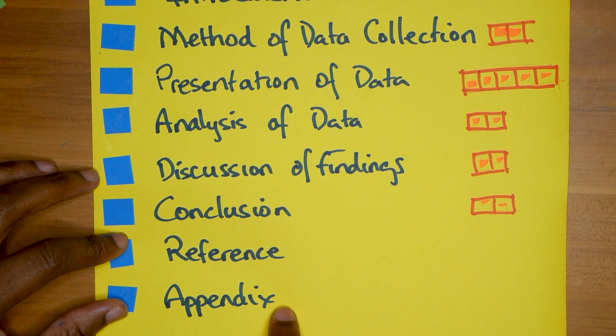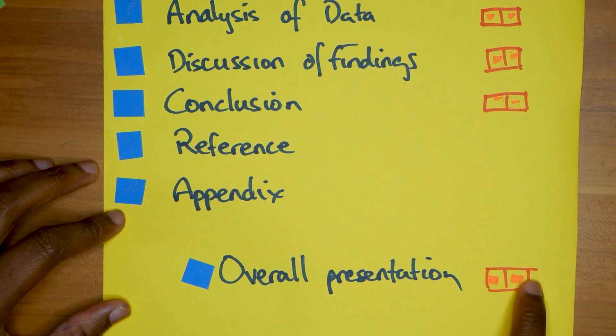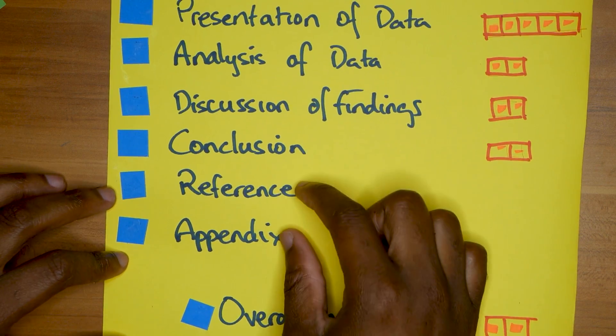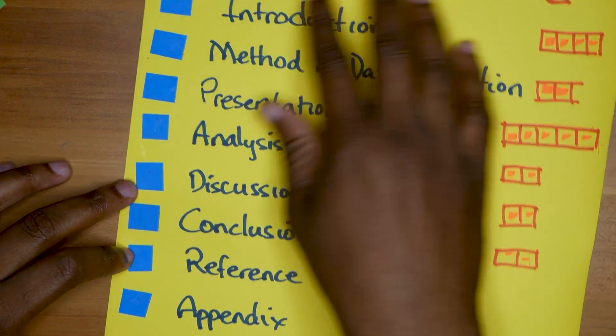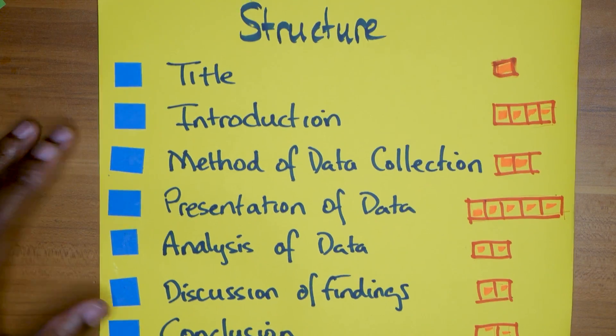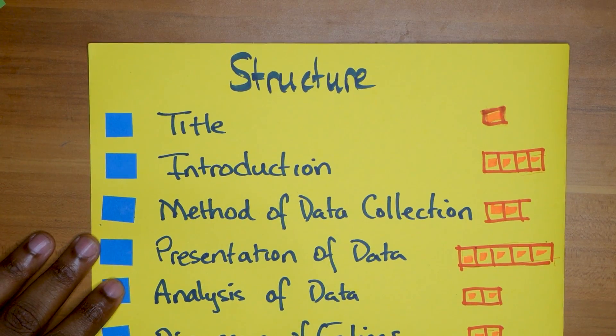In most SBAs you want to put in a reference and appendix, but you don't get marked on this. However, you have two marks for overall presentation, and the teacher may take out marks for overall presentation if you don't have a reference or appendix. It's kind of like one mark for each, and also just the neatness of your SBA, how it's presented, how you use Microsoft Word.